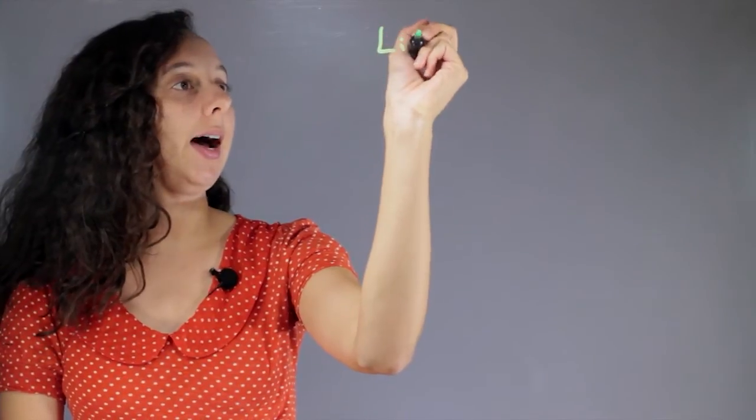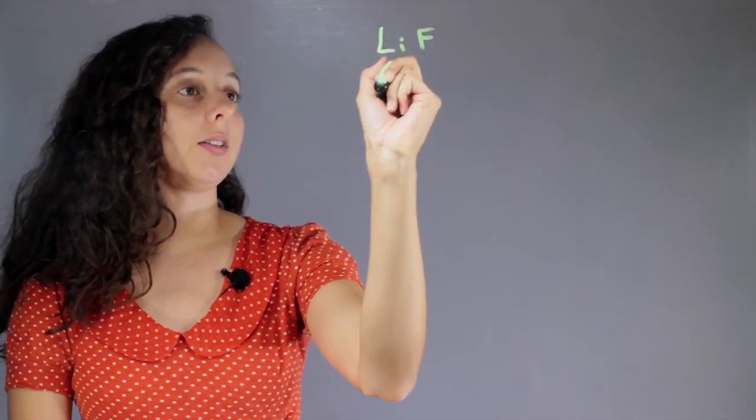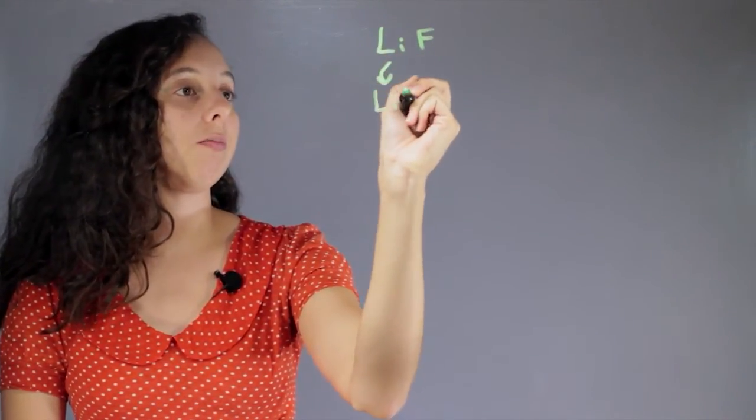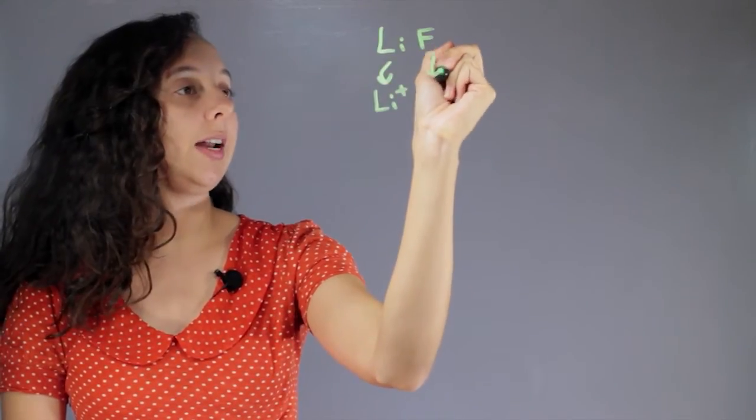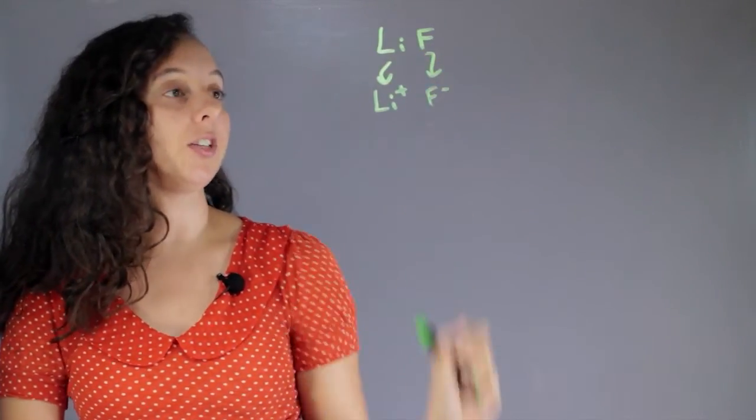Okay, so lithium fluoride has the chemical symbol LIF. Lithium has a charge of plus 1, and fluoride has a charge of minus 1.